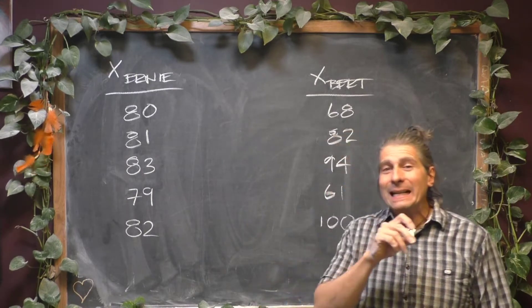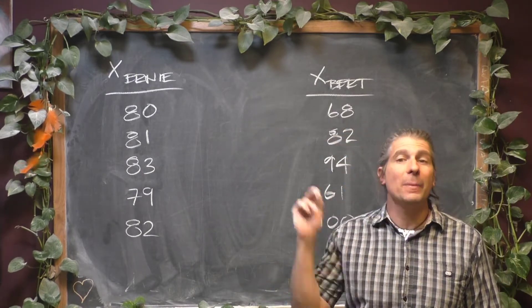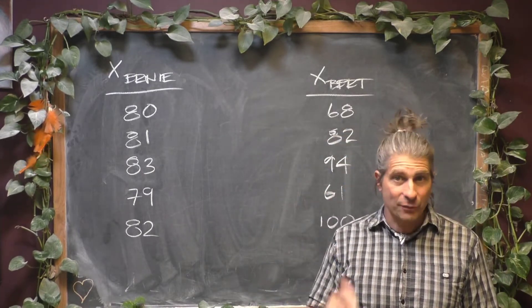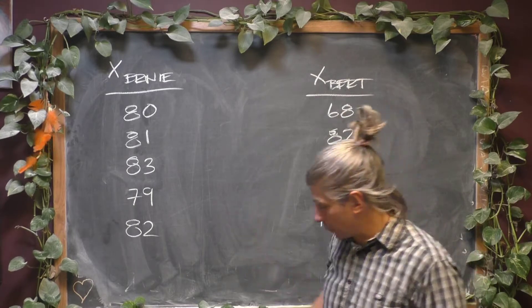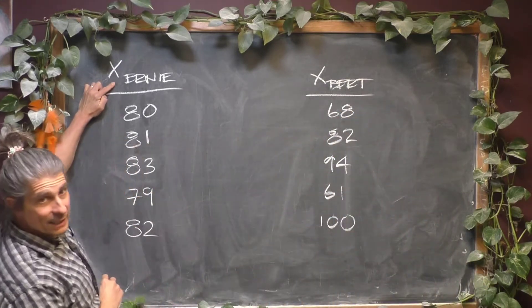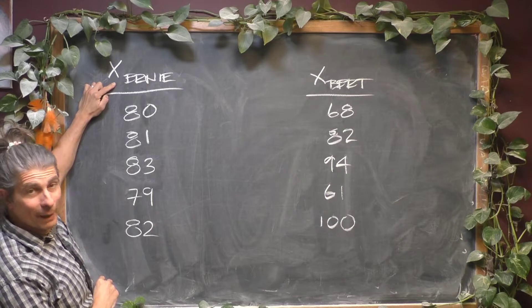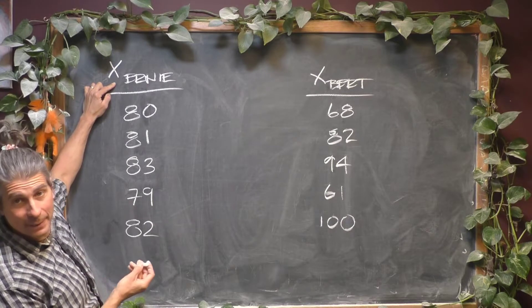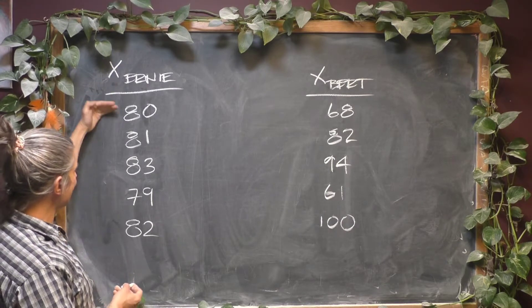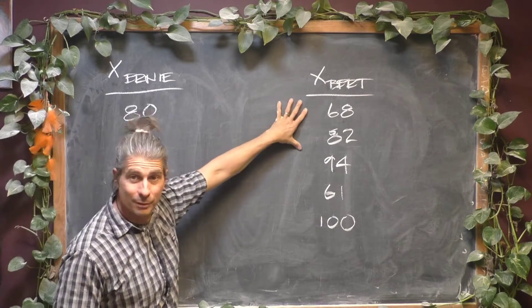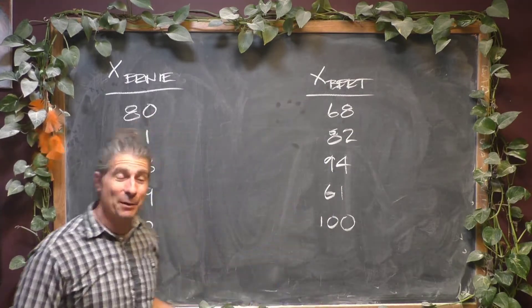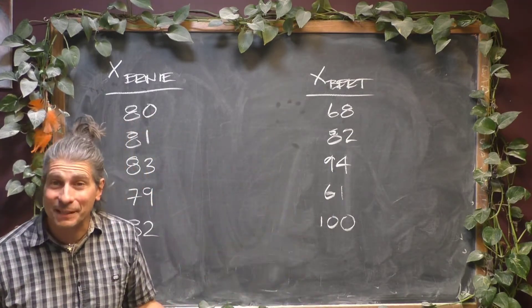Okay, so we're going to measure deviation from the mean. So let's look at Ernie first. These are Ernie's data points. Now, you might not remember this from yesterday's videos, but these have an average of 81, as do Bert's. That was one of the challenges yesterday was that Ernie and Bert both have the same average.